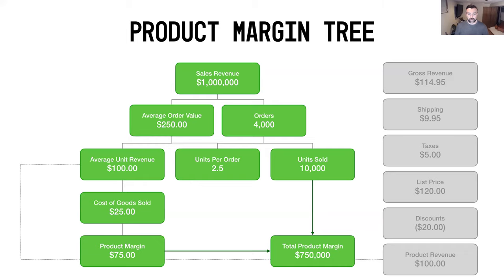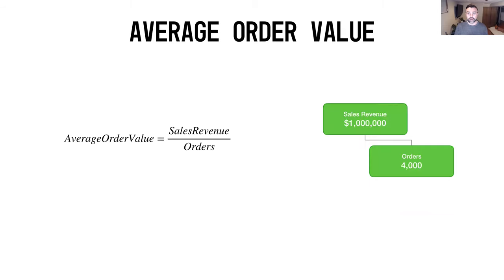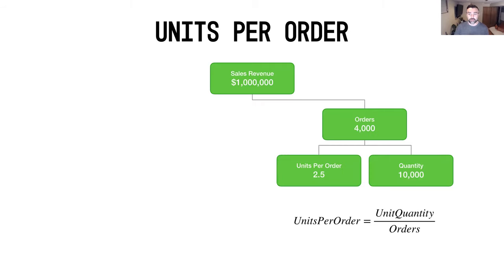For now, today we're going to talk about average units per order — this metric right in the middle of the tree. Last time we looked at average order value: the formula is sales revenue divided by orders, so $1,000,000 divided by 4,000 orders gives you $250 in average order value. Today we look at the same million dollars in sales revenue and see how it breaks down into units per order: 10,000 units divided by 4,000 orders gives you 2.5 units per order. This is also called average quantity.